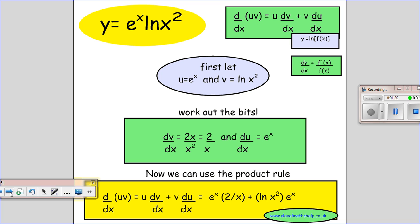So I thought I'd do one slightly harder example where we're using the product rule. Remember how the product rule works. If we have two things multiplied together and we differentiate, we take the first one and multiply it by the differential of the second one plus the second one multiplied by the differential of the first one. So first of all, you have to decide what's u and what's v. So I've got u equals e to the x and v equals ln x squared.